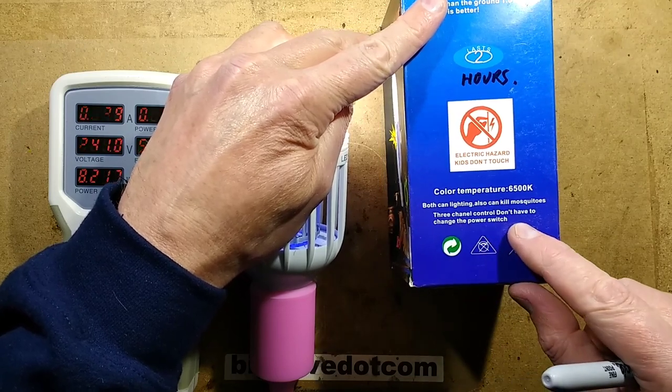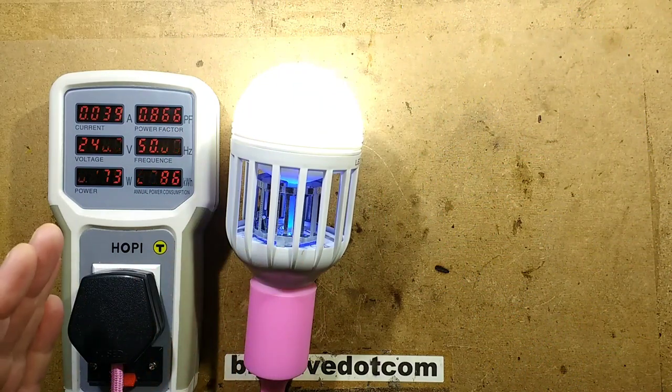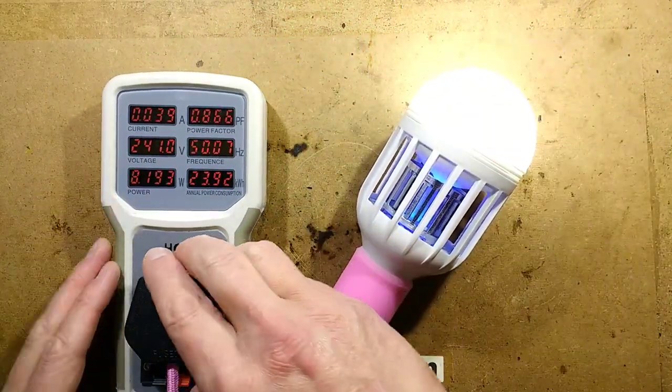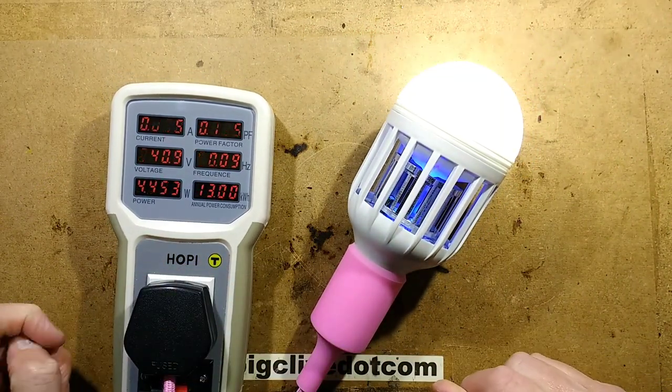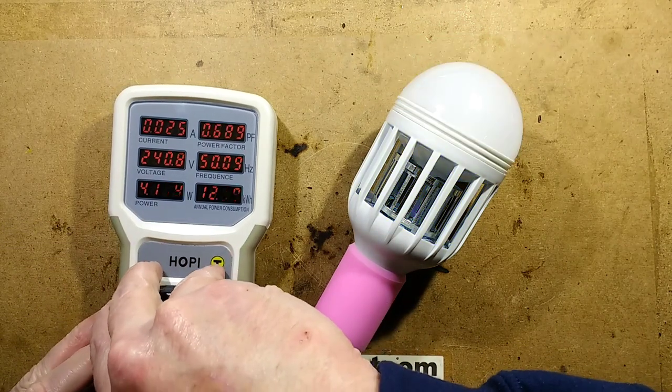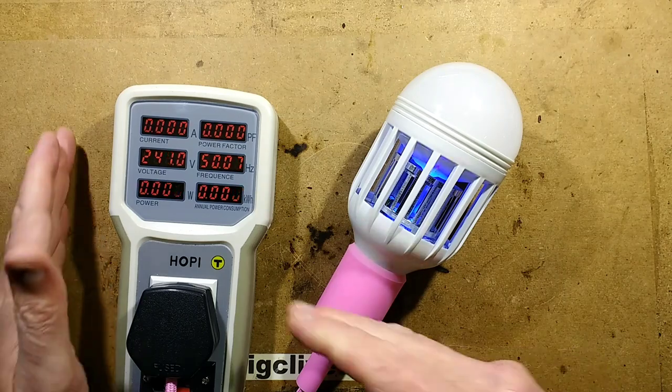Three-channel control. Don't have to change the power switch. I was thinking, does this really have three-channel control? Is it one of these that when you turn it off and on, it changes intensity? So, watch the display. It goes from 8 watts. If I turn it off and put it back on again, it goes down to about 4.5 watts. And if I turn it off and on again, just the ultraviolet LEDs are on. That's quite interesting.